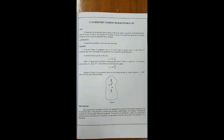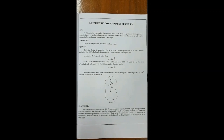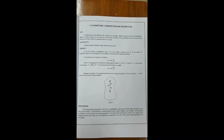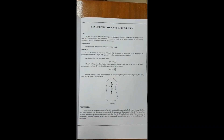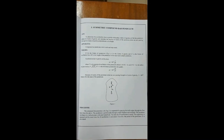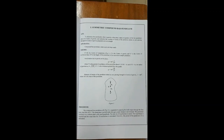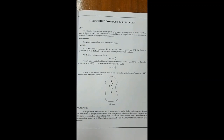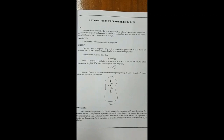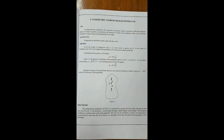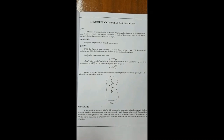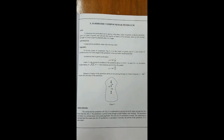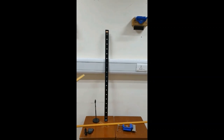Symmetric compound bar pendulum. In this experiment, we are going to determine the acceleration due to gravity at a place, the radius of gyration of the bar pendulum about its center of gravity, and we will also calculate the moment of inertia of the pendulum about an axis passing through its center of gravity perpendicular to its length.